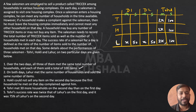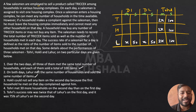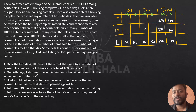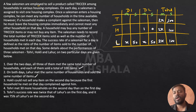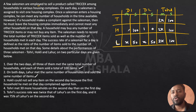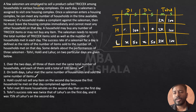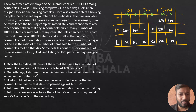Hockley could not sell any item on the second day because the first household he met on that day complained against him. So on Day 2, Hockley met exactly 1 household and sold 0 items. Since his total sold is 100, he sold all 100 items on Day 1. His Day 1 households met is therefore 2x minus 1.